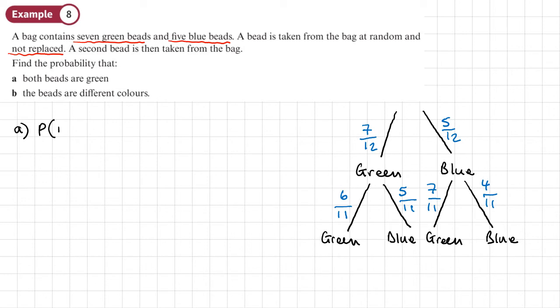So the probability that both beads are green. OK, so if they're both green, we're going down this branch here. So it's going to be multiplying because we're going down a branch, along a branch. So that would be seven over 12 times six over 11.